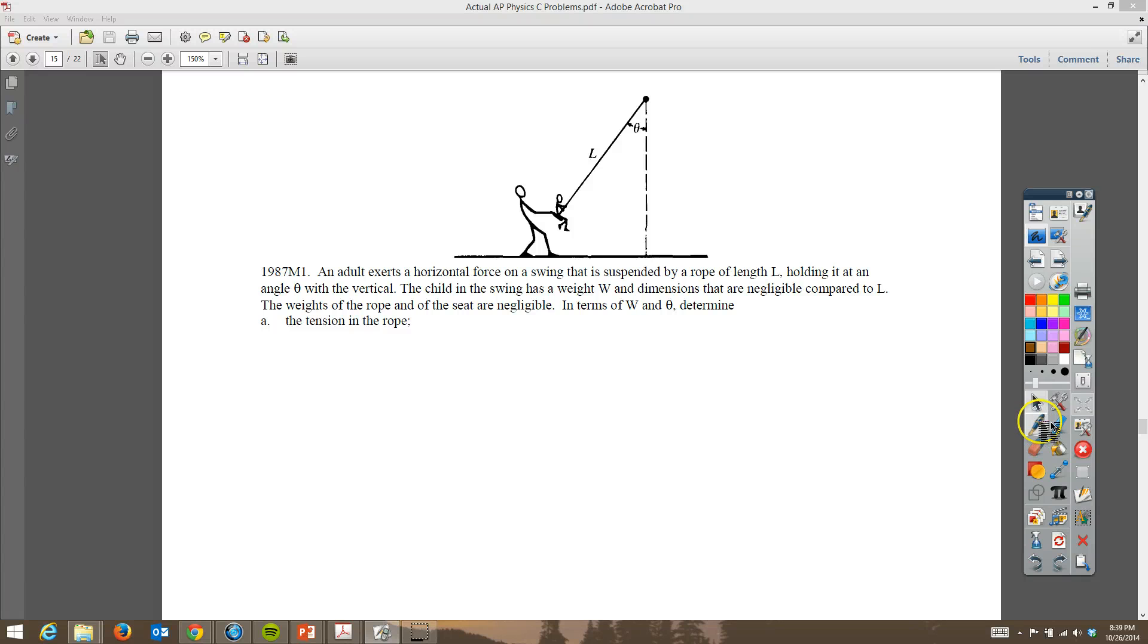Alright, AP Physics C, here we go. This is 1987 M1, this is Horner, and we're looking at this kid that is being pulled back by a parent. We're going to draw a line straight down - this would be the MG for that kid. We know that we have tension in the line here, and then we have the horizontal force by the person pulling that kid back as FH. You get three points for doing this diagram.